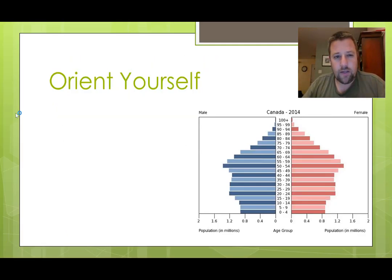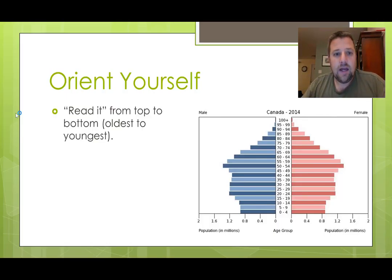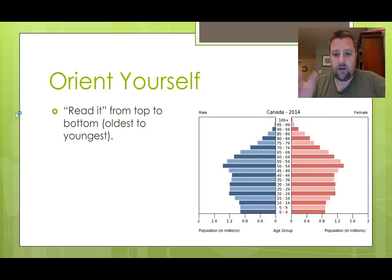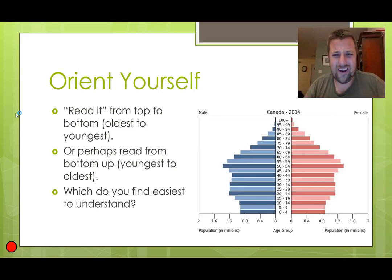To understand these, you can approach them from the top down or the bottom up. If you start at the top, the oldest people are there — very few. As you get younger, more people are surviving, there are more people in those age groups. Then you go to the bottom — there are a certain number of zero to four year olds. You could also start at the bottom and look at the newborns first, the young children, and move up from there. It's really whichever you find personally most useful.